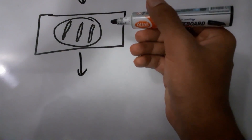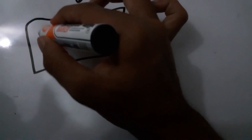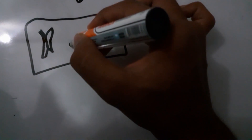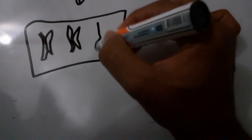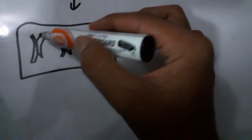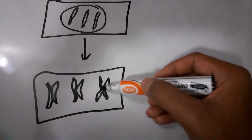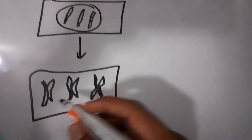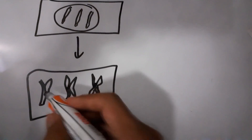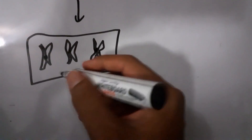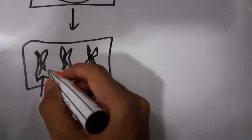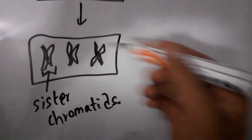These chromosomes will replicate themselves. It was only one chromosome before, and now it has been replicated — the same chromosome is doubled. There is a protein called the kinetochore protein, and these two strands are now called sister chromatids. These sister chromatids are identical to each other.